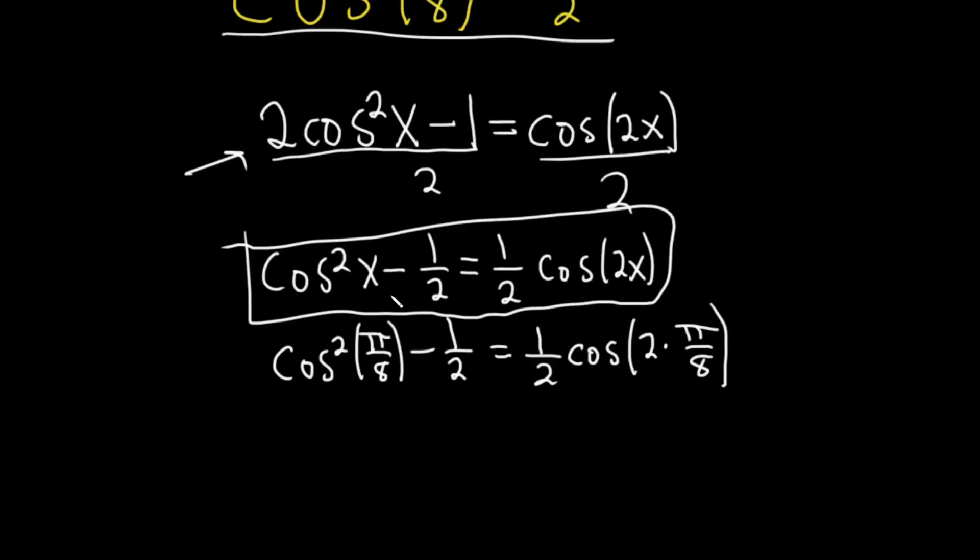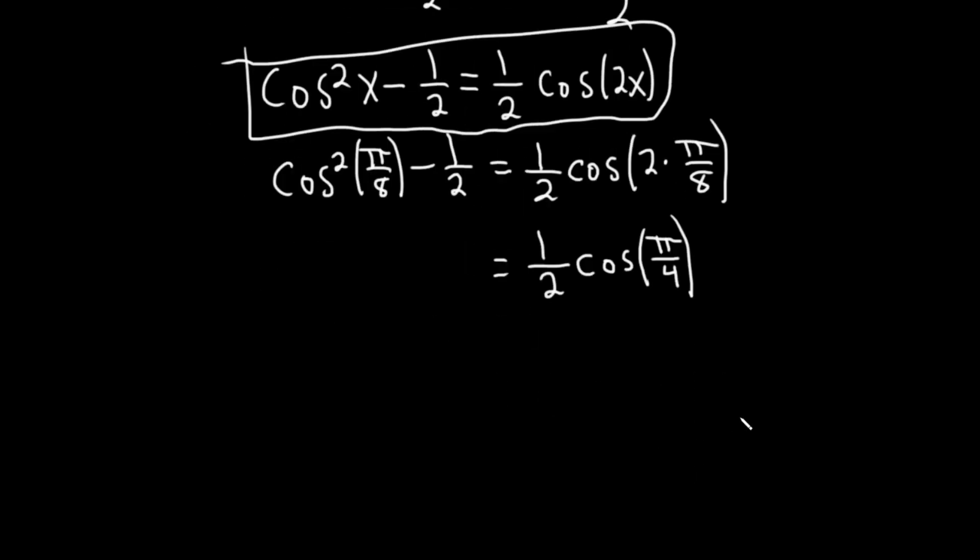And then this is equal to 1 half cosine of pi all over 4. So this is equal to 1 half. And then the cosine of pi over 4 is the square root of 2 over 2. So this is equal to the square root of 2 over 4.